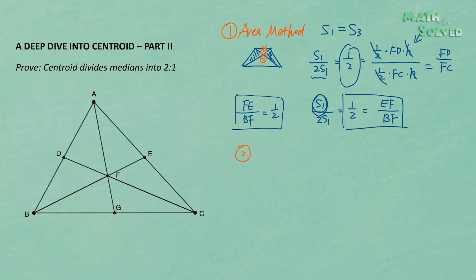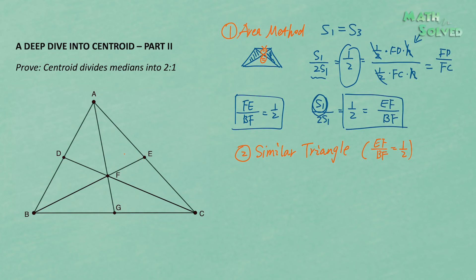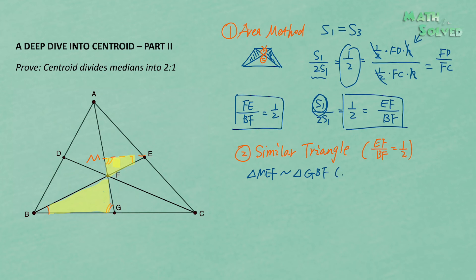The second method uses similar triangles. Again, with three medians, we only need to pick one median — for example, proving EF over BF equals 1 over 2. In this diagram, there are no two triangles that are immediately similar, so we draw an auxiliary line: pass through point E to draw EM parallel to BGC. This creates pairs of congruent alternate interior angles, giving us triangle MEF similar to triangle GBF by AA similarity.